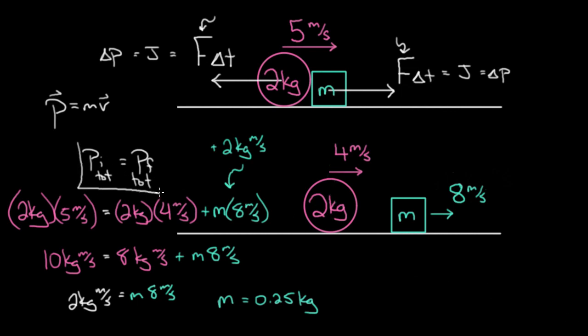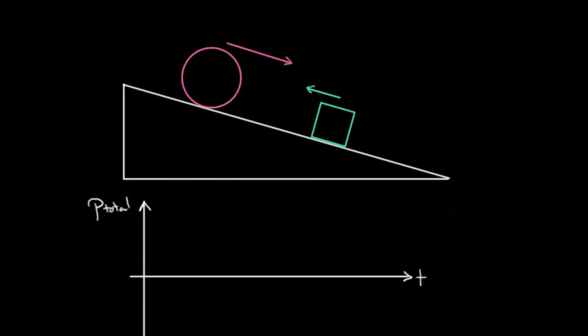Now, how could you ever make it so that this was not equal? Well, this will always be equal if the only forces being exerted are internal to your system. The only way you make this non-equal is to have external forces, so what would that look like?